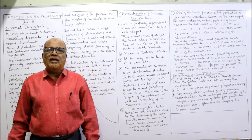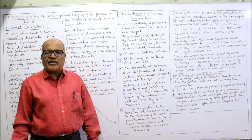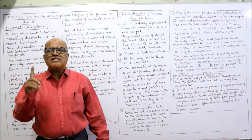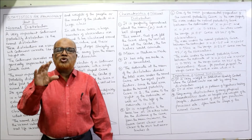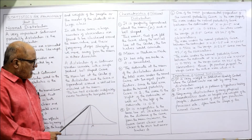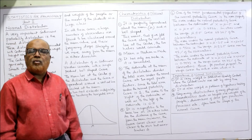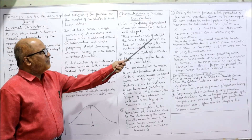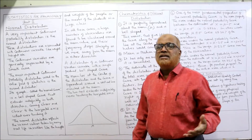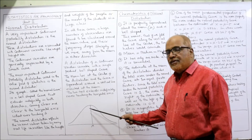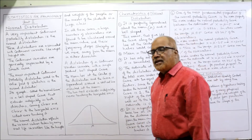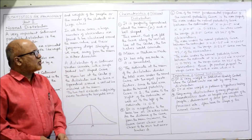In an examination you may get a theory question about the characteristics of the normal curve or normal distribution. The first characteristic feature is that it is perfectly symmetrical about the mean and is bell-shaped. Symmetrical means the area to the left of the mean is exactly equal to the area to the right. This means if we fold the curve along the vertical line at the center, the two halves will coincide.